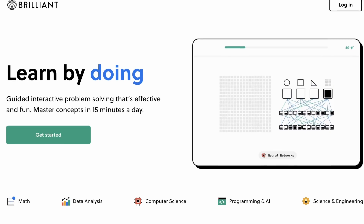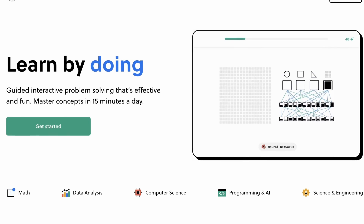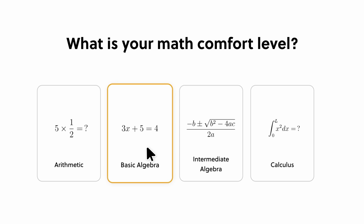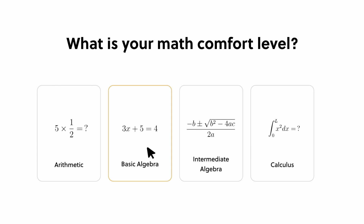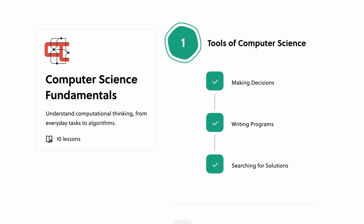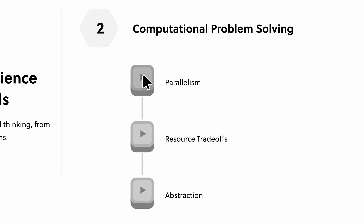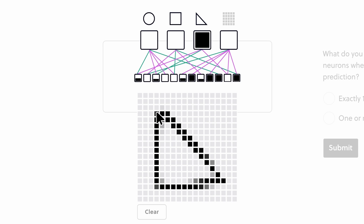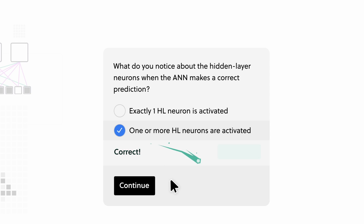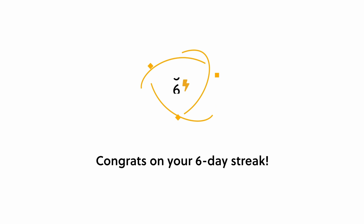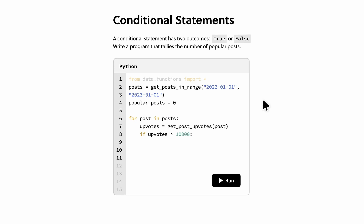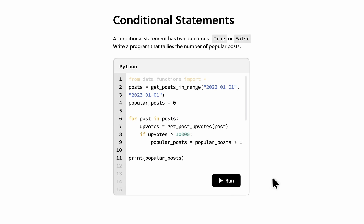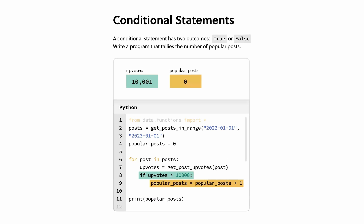This video is sponsored by Brilliant. Brilliant is learning by doing. With thousands of interactive lessons in math, data analysis, programming, and AI, Brilliant adopts a first principle approach to foster comprehensive understanding from a fundamental level. Each lesson integrates hands-on problem-solving activities, which are demonstrated to be six times more impactful than passive learning through lectures.